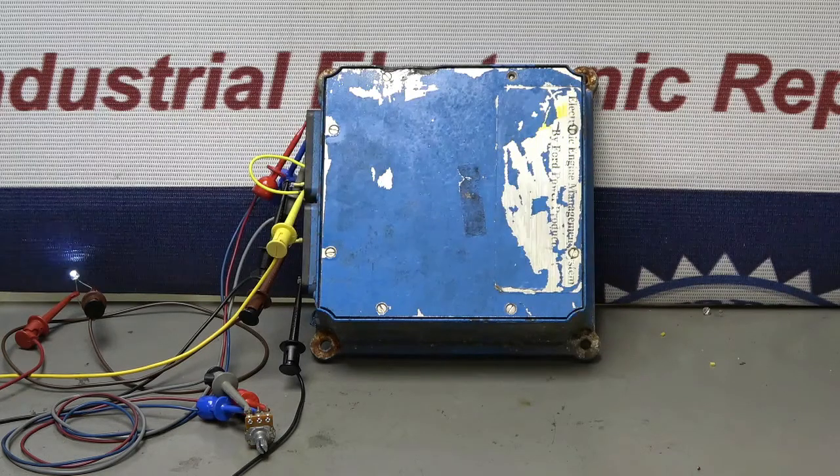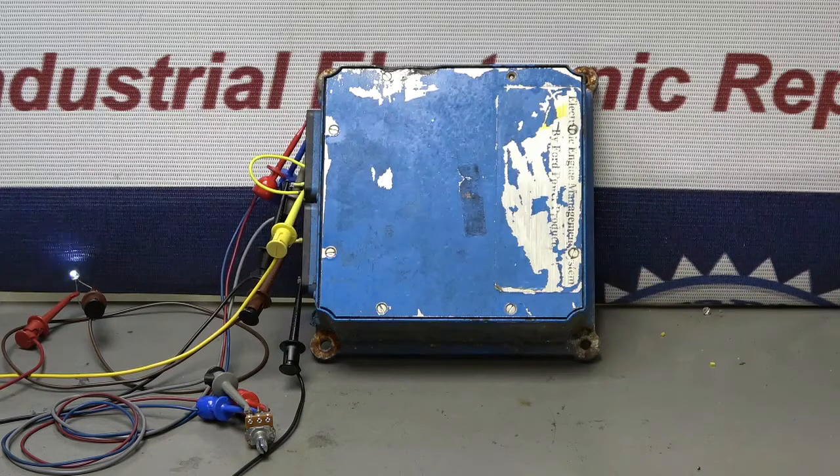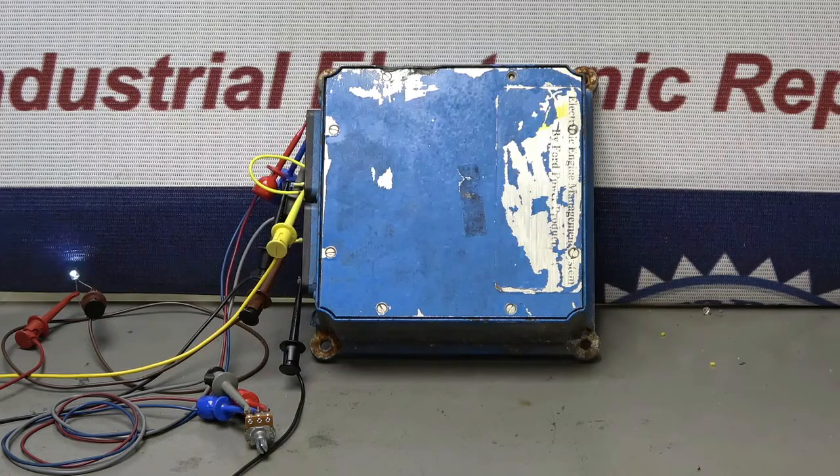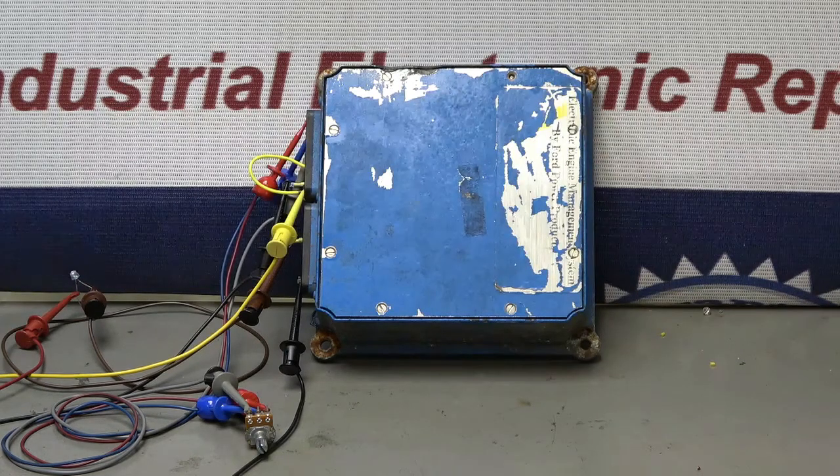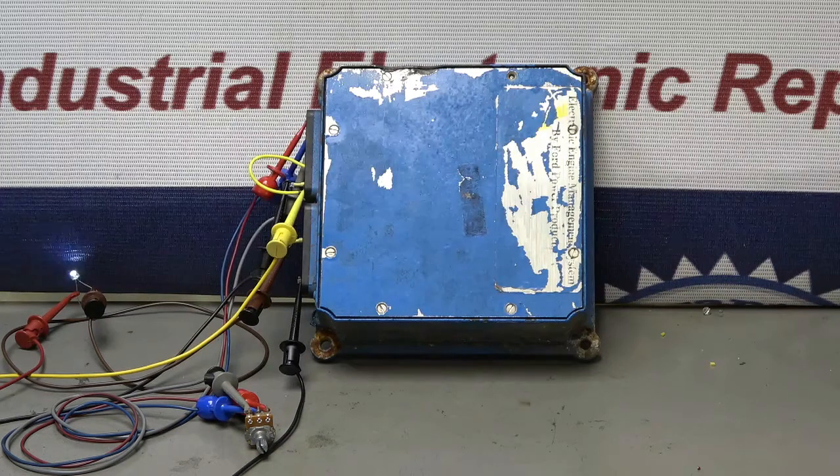As you can see in the video, we are monitoring the error codes for the module via the LED lights. Yes, they are in binary. The first test is without the throttle position sensor, which gives us an error.